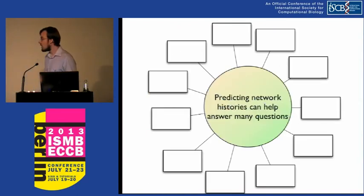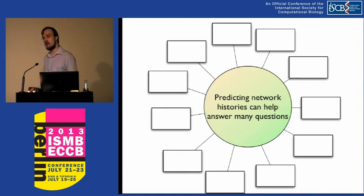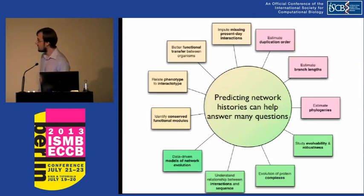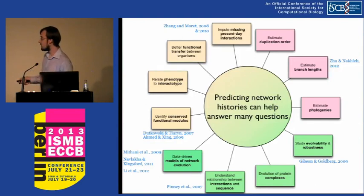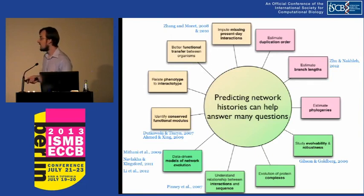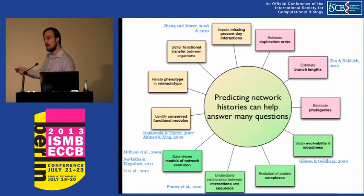So why might we want to infer network histories? Predicting network histories can help answer a lot of fairly interesting questions. We could use ancestral network inferences to help impute missing present-day interactions, to understand relationships between protein interactions and sequences — some of this work has even appeared previously at ISMB — and to have data-driven models of evolution and to find highly conserved functional modules.